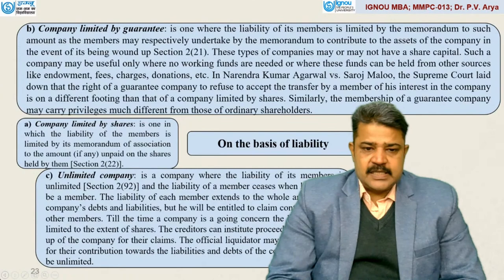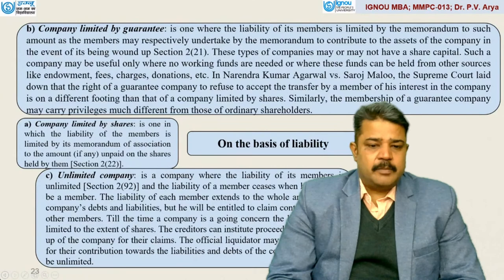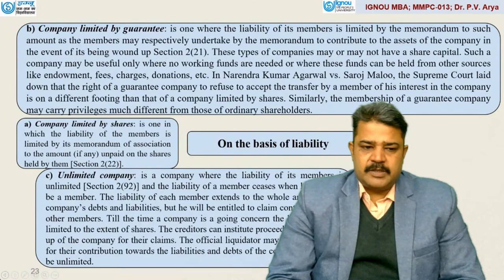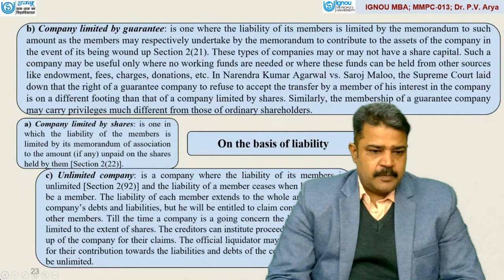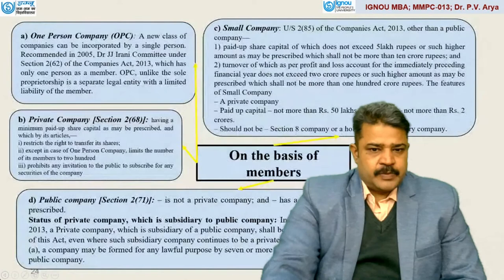The third type is unlimited company — a company where the liability of the members is unlimited, Section 2, Subsection 92. The liability of a member ceases when he ceases to be a member. The liability of each member extends to the whole amount of the company's debts and liabilities, but he will be entitled to claim contribution from other members. Till the time a company is a going concern, the liability will be limited to the extent of shares. The official liquidator may call the members for their contribution towards liabilities and debts of the company, which can be unlimited.